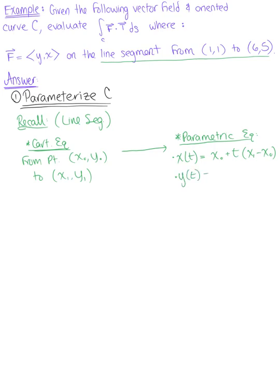And the y component of our parametric equation is y₀ plus t times (y₁ minus y₀), such that t is greater than or equal to 0 and less than or equal to 1.